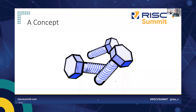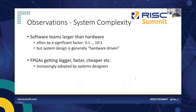We start with a couple of observations. Over the last couple of decades, software teams have been getting larger and larger at a significant rate, faster than hardware teams. The ratio of software to hardware team size can be 3-to-1, up to 10-to-1. Ironically, the design of systems is still somewhat hardware-driven, even though software represents a larger portion of the work.